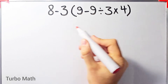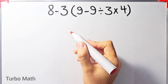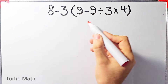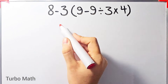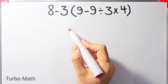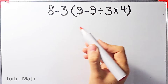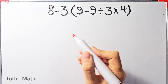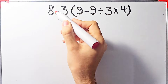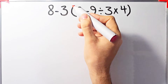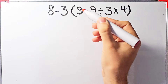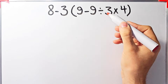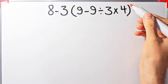Hi guys, welcome to Turbo Math channel. Many people when they see this question don't know which operation to do first, so they might get it wrong. The question is: 8 minus 3 times open parenthesis 9 minus 9 divided by 3...